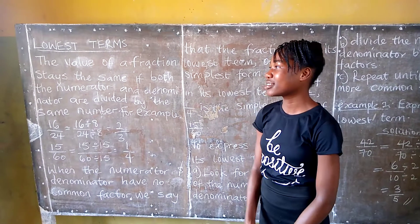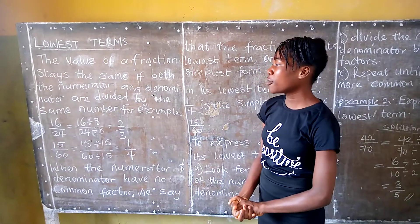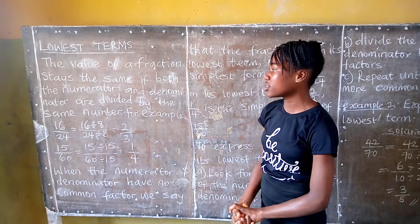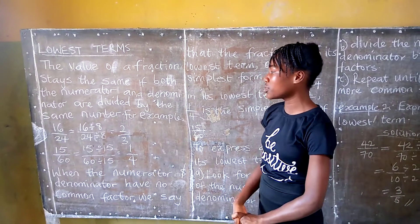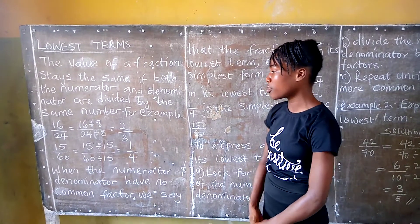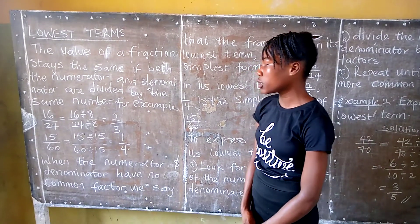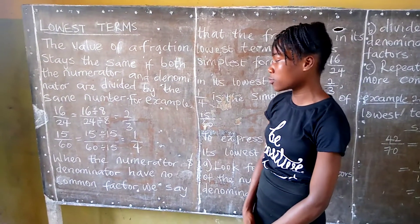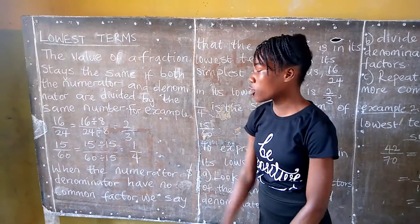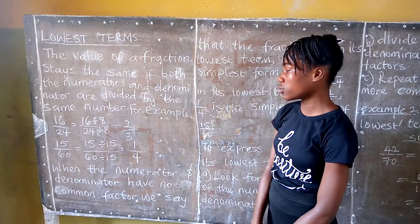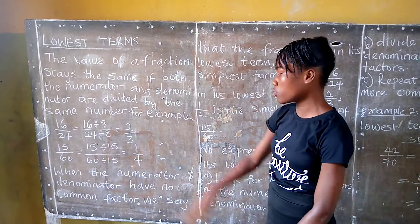Welcome to Mastering Week — lower terms. The value of a fraction stays the same if both numerator and denominator are divided by the same number. For example, 16 over 24 equals 16 divided by 8 over 24 divided by 8. Here, 8 is the common factor, and this reduces to the lower term which is 2 over 3.